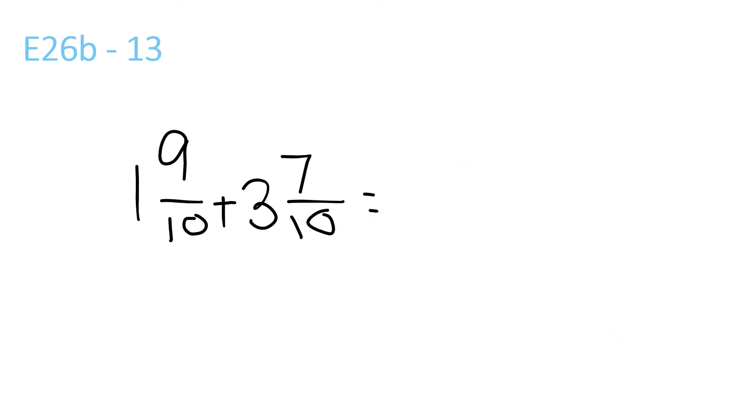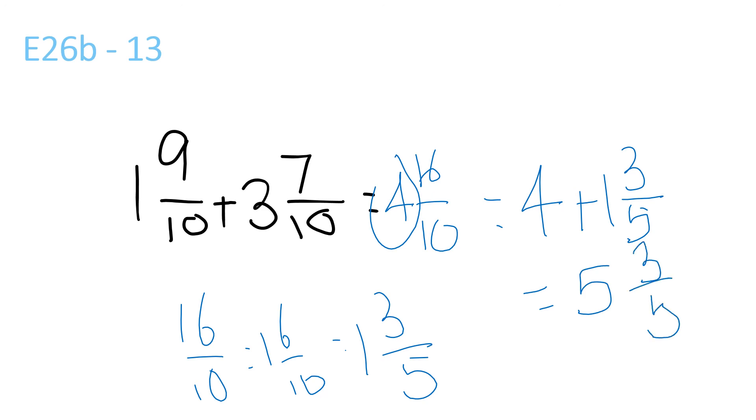1 plus 3 is 4, 9 plus 7 is 16, over 10. 16 over 10 can be reduced to 1 and 6 over 10, which can be reduced to 1 and 3 over 5, so, this would equal 4, because of the 4 here, plus 1 and 3 over 5, which is equal to 5, 3 over 5, that's your answer.